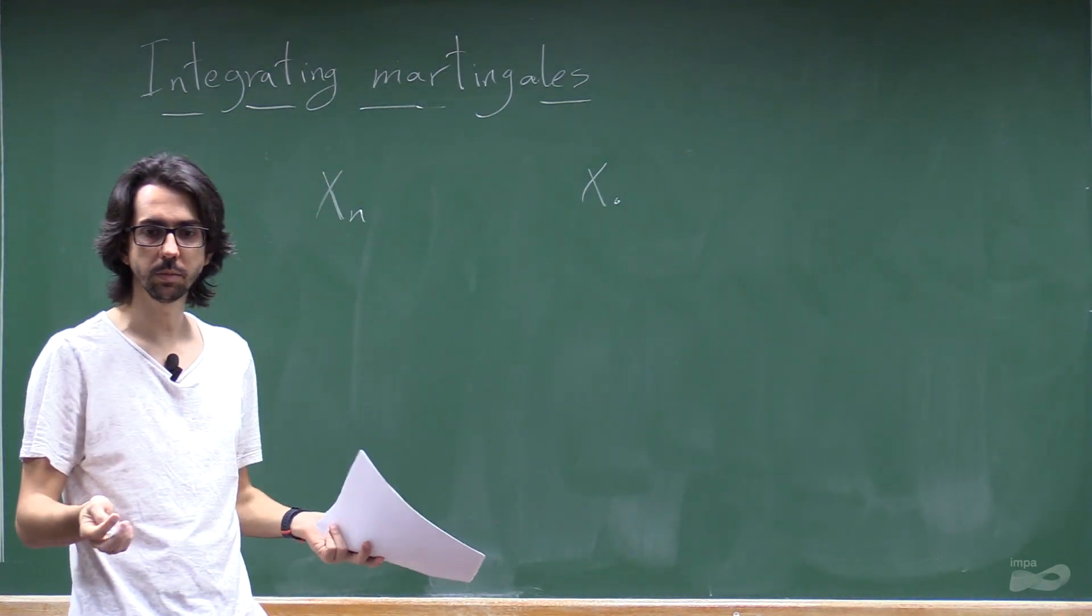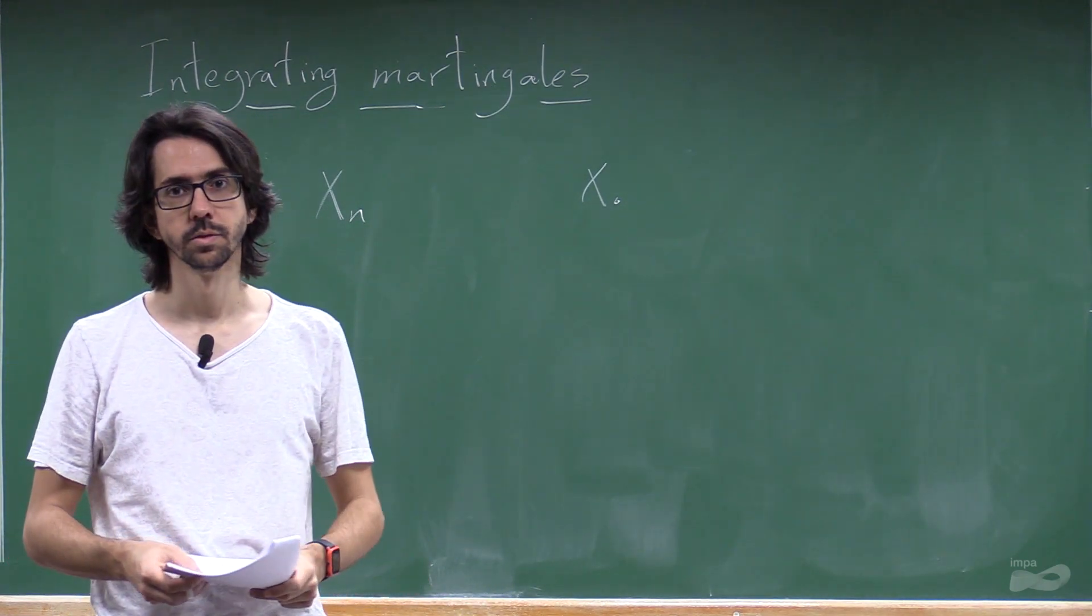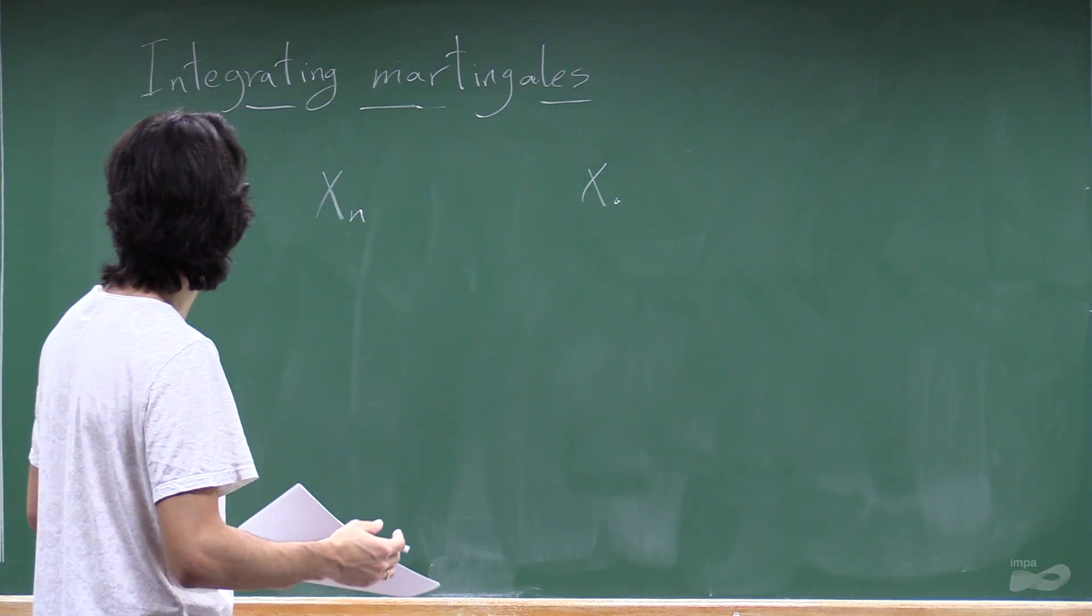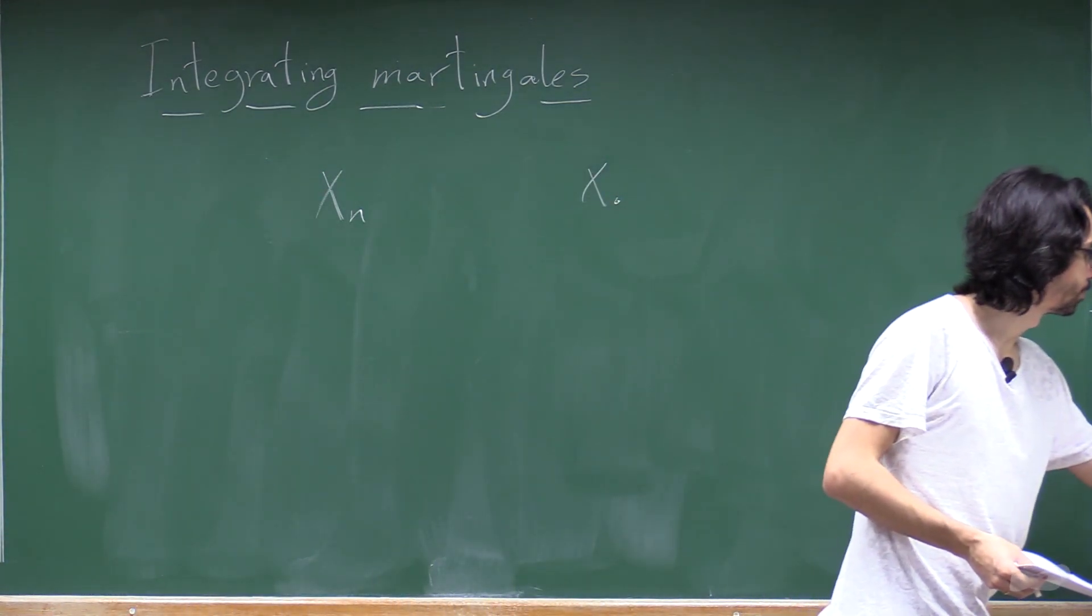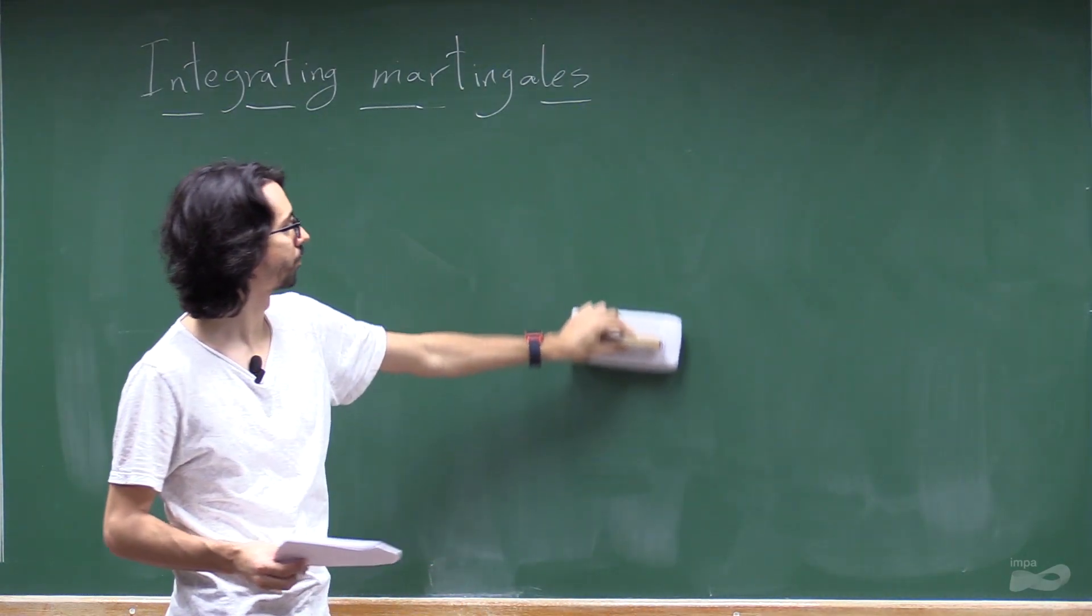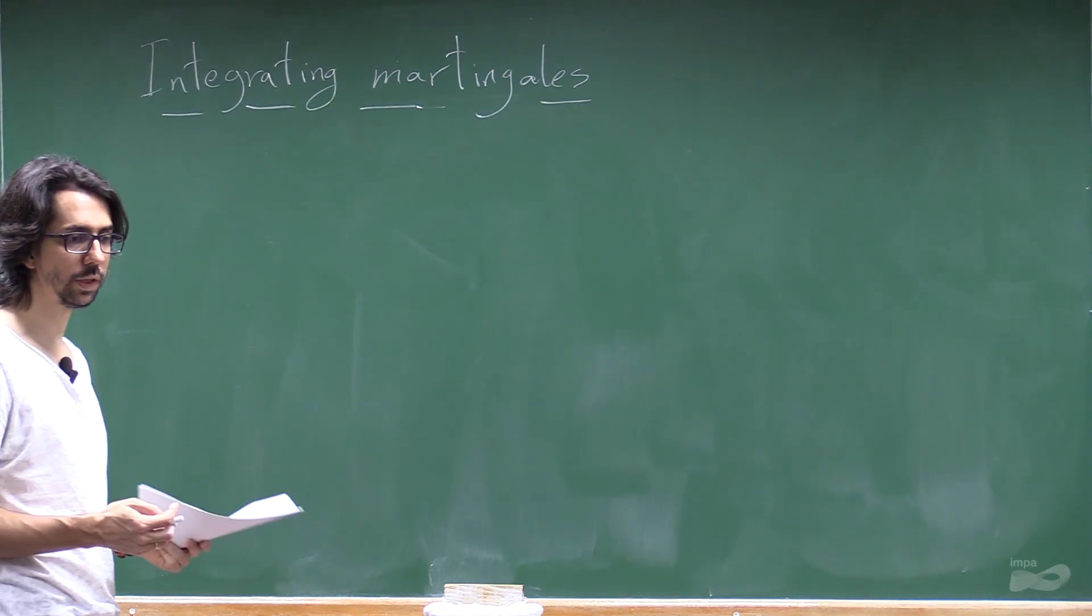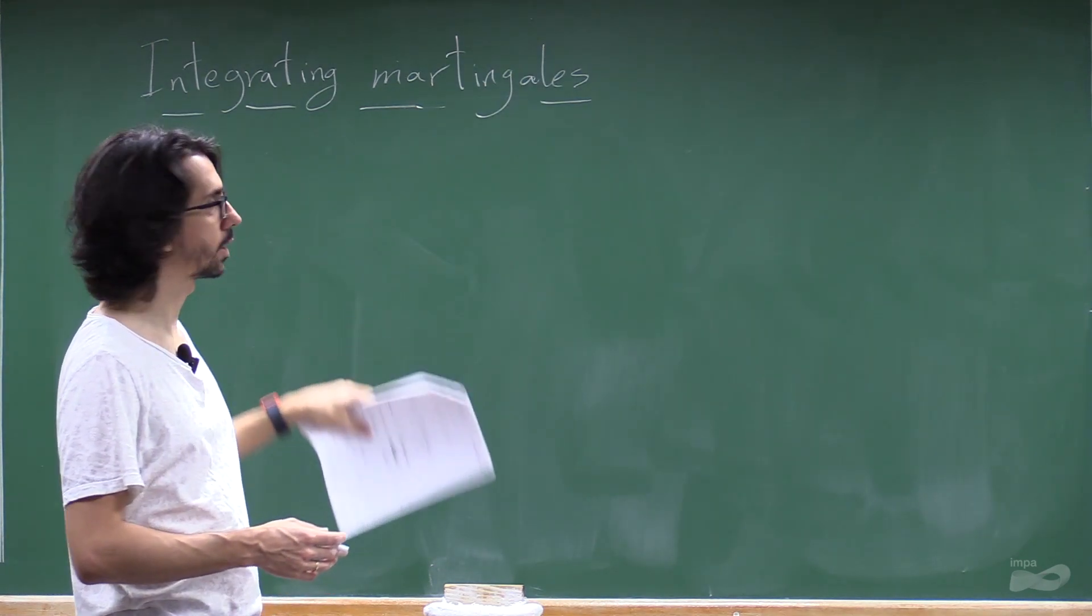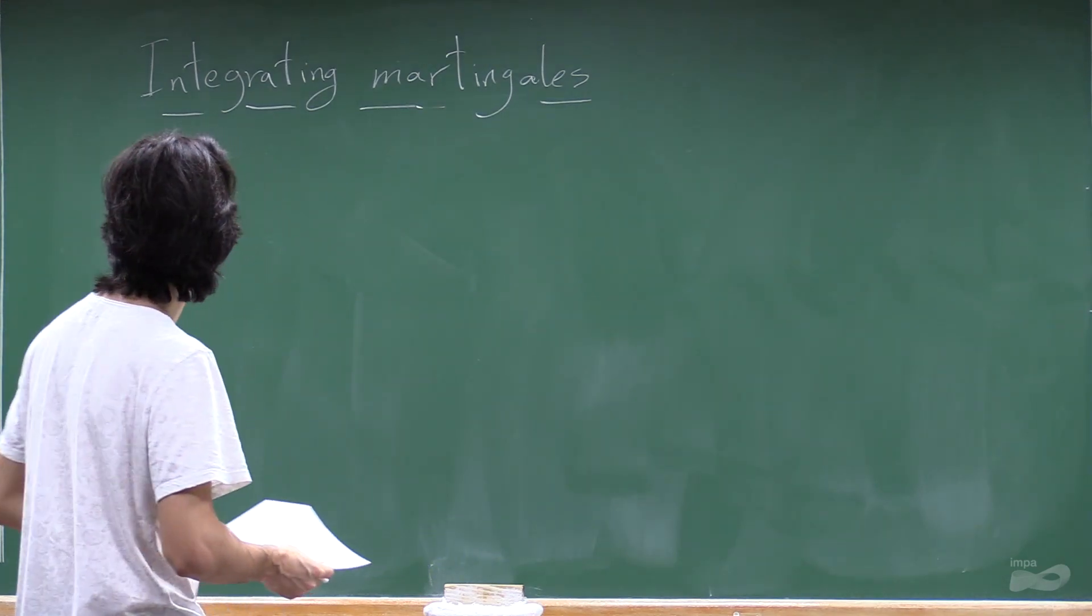So you never play the game, you start with X0 and you stay with X0. If you play the game, then your money at time n is going to be Xn, forever. There is not even a way to exit the game after some time. So what we are going to do now is to make this closer to a game. We're going to have a process that's going to be modeling decisions. So you're going to actually play the game. But for this, we need the definition.